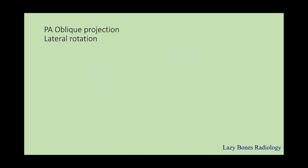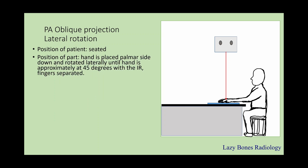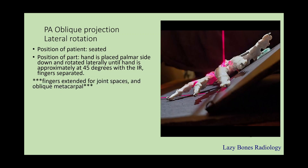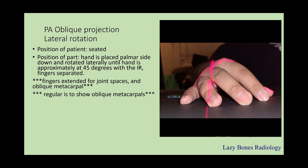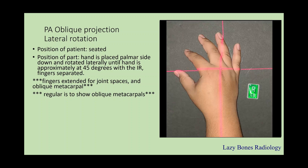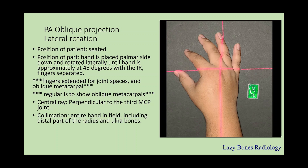PA oblique projection with lateral rotation. Patient seated, as you can see here. The position of the part is the hand is placed palmar side down and rotated laterally until the hand is approximately 45 degrees with the IR. There are two types of obliques: extension and regular. The extended oblique has fingers extended for joint space evaluation and oblique metacarpals. While in the regular oblique, it's just to see the oblique metacarpals of the hand. The central ray is perpendicular to the 3rd MCP joint. Make sure to collimate the entire hand including the distal part of the radius and ulnar bone. SID is 40 inches. Make sure to label correctly.